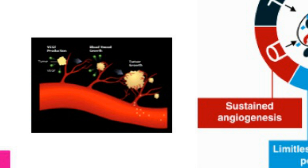When a tumour grows rapidly, the cells in the centre of the mass don't readily have access to oxygen and nutrients from the bloodstream. Although cancer cells have evolved the ability to survive under hypoxic conditions for a time, they will eventually require access to the blood in order to survive and grow. So they have evolved a mechanism to grow their own vasculature, called angiogenesis. Angiogenesis is regulated by a fine balance between pro- and anti-angiogenic factors such as VEGF, a pro-angiogenic factor, and thrombospondin-1, an anti-angiogenic factor.